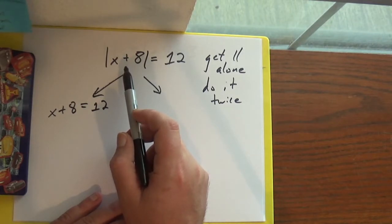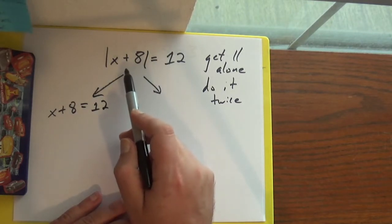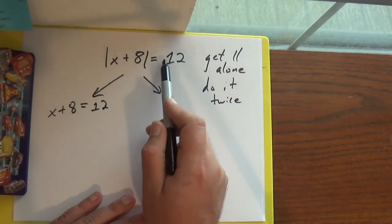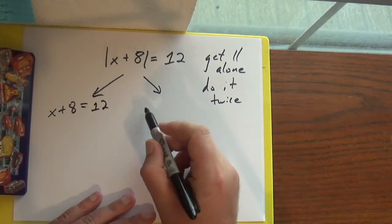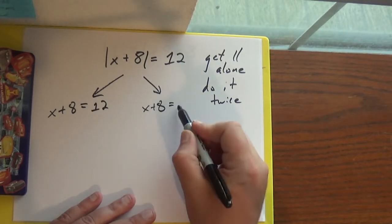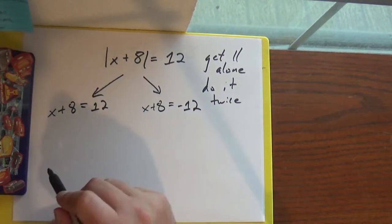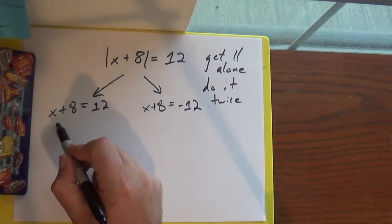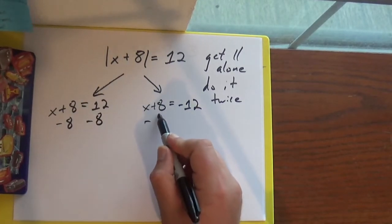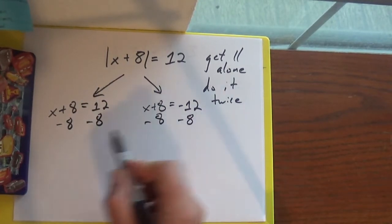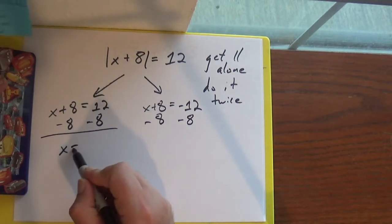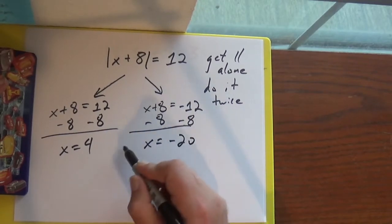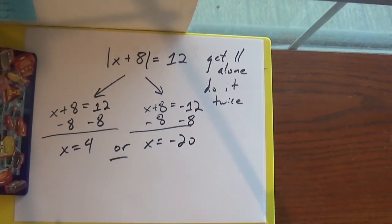For the 'does something' side, the way it changes the sign is basically by multiplying by a negative. Since I've got my absolute value alone, I'm just going to change the sign on the other side instead. So now I need to solve this twice — I'll subtract 8 from both sides for each case. So x is 4...